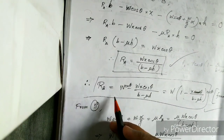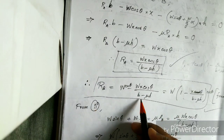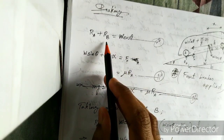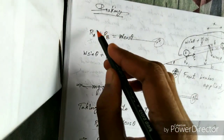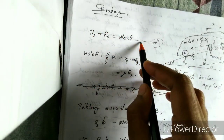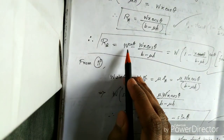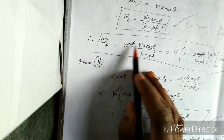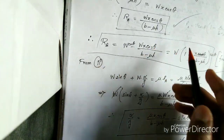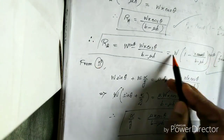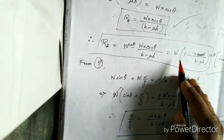Then we have RB, which equals W cos theta minus W x cos theta divided by (B minus mu H). I got this from equation 1 — I substituted the value of RA and rearranged to get RB. Taking W cos theta common from both terms, we get RB equals W cos theta into (1 minus x divided by (B minus mu H)).